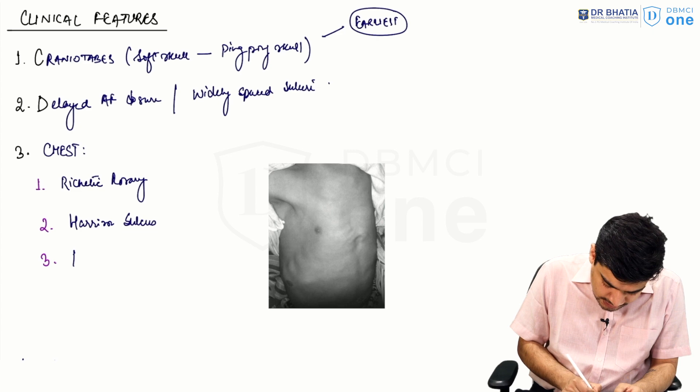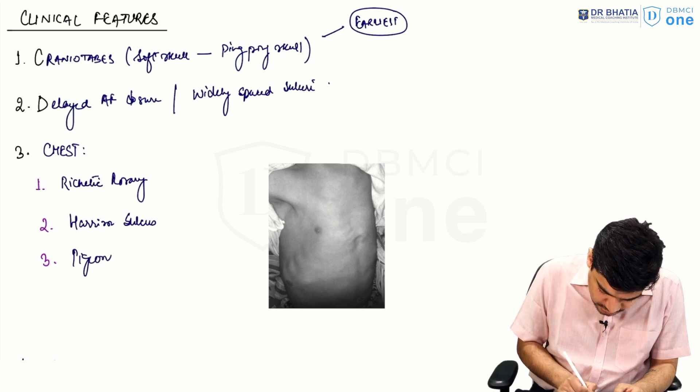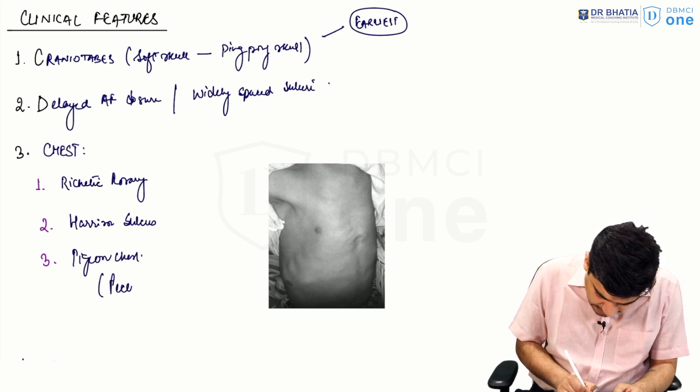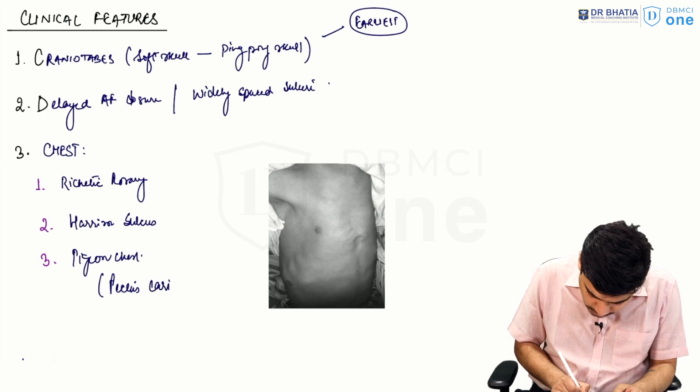Apart from ricketic rosary, there can also be Harrison's sulcus and pigeon chest, also called pectus carinatum.